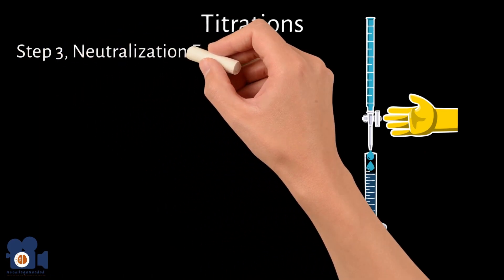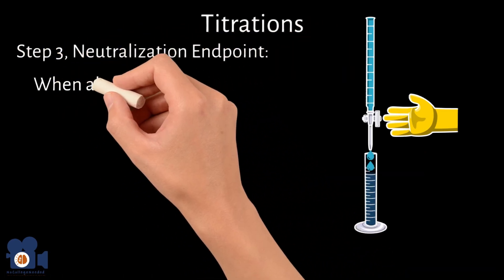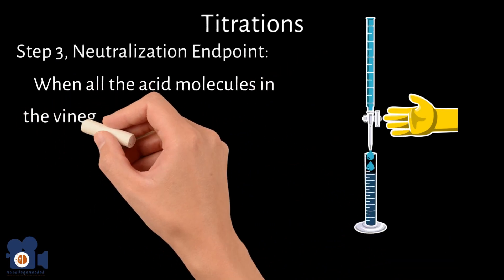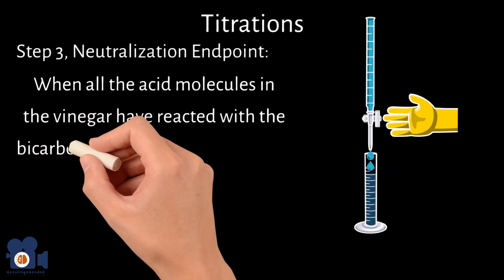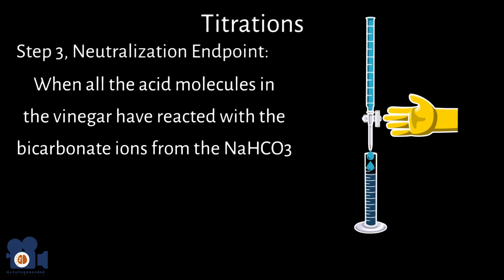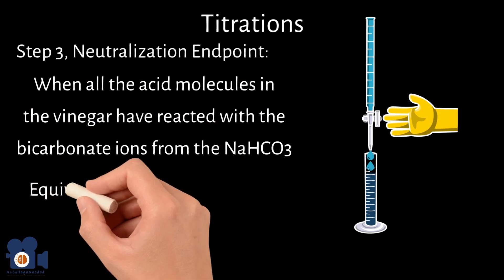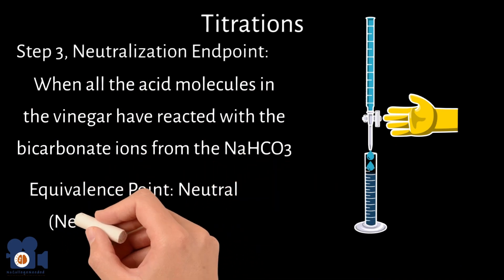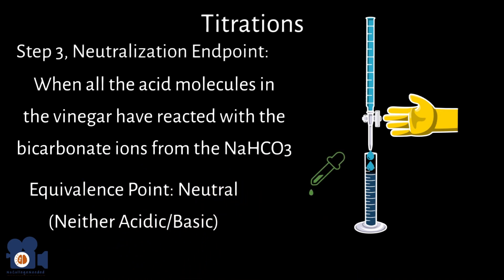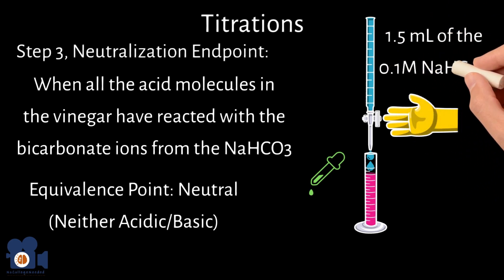Step three, neutralization endpoint. The magic happens when all the acid molecules in the vinegar have reacted with the bicarbonate ions from the NaHCO3. At this point, the solution reaches the equivalence point where it's neither acidic nor basic, but neutral. That's when the phenolphthalein indicator does its magic, turning the solution from its initial colorless state to a beautiful pink. This sudden color change signals the endpoint of the titration. For our example, let's say we added 1.5 milliliters of the 0.1 molar NaHCO3.